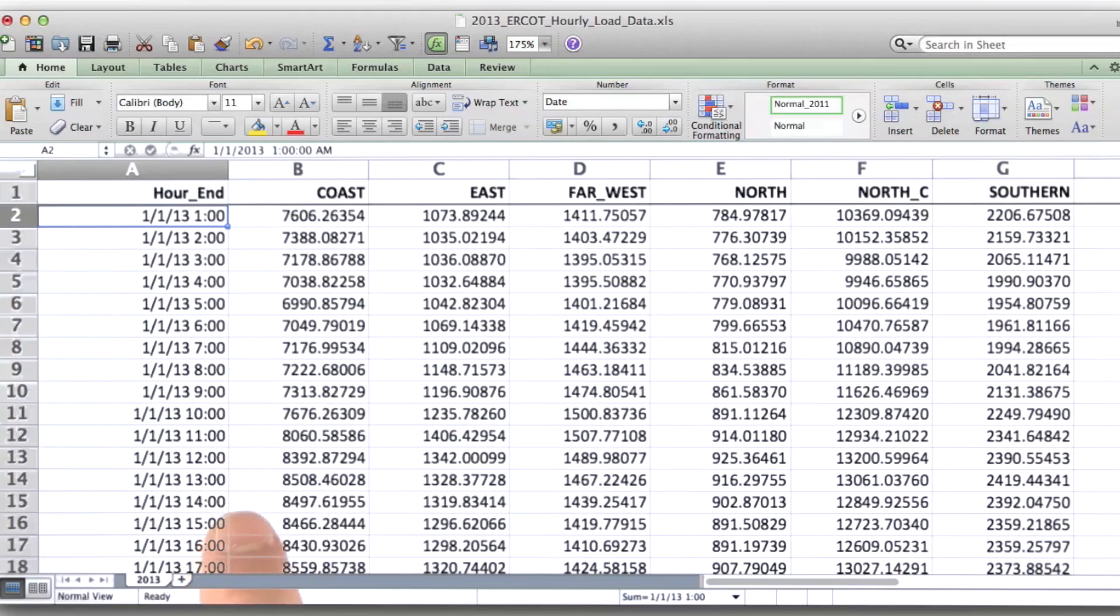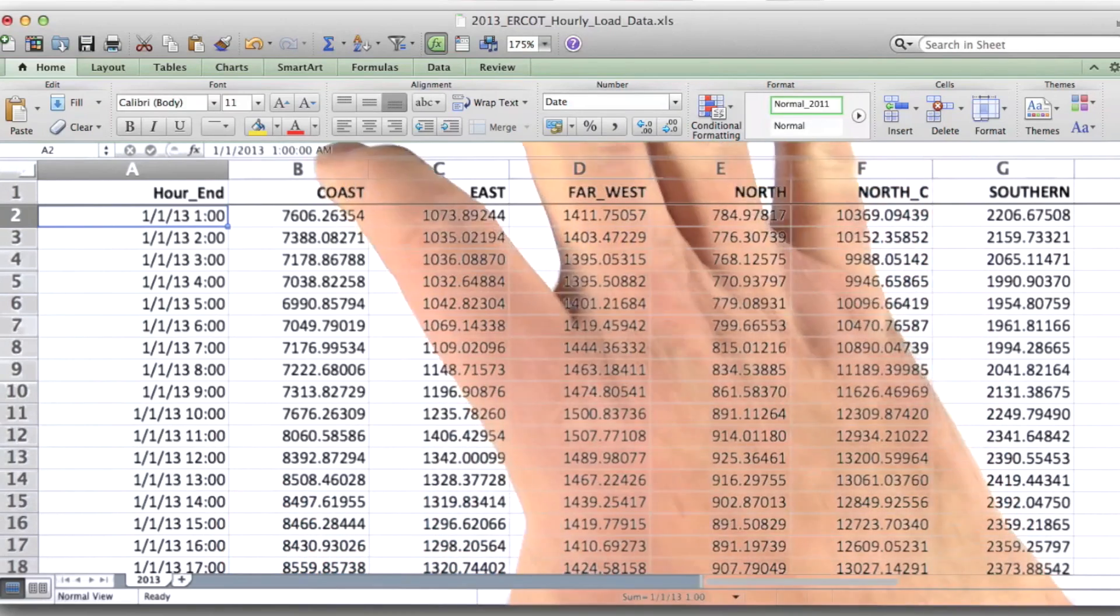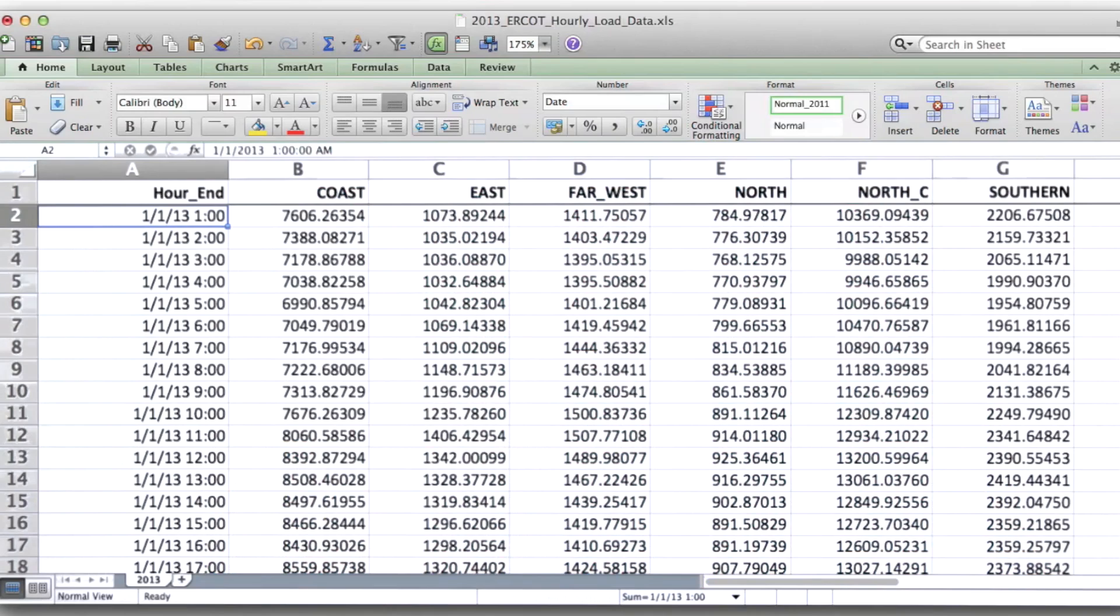What I'd like you to do here is read through the ERCOT hourly load file, this file here, and report the time stamp, which is stored in this column, and load for the min, max, and average values from this column, from the coast region of Texas.